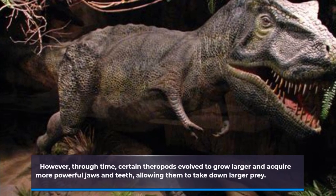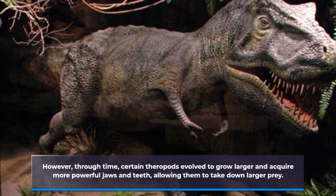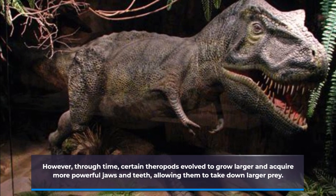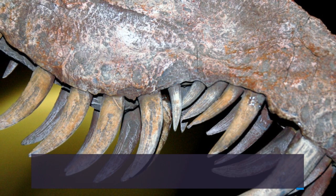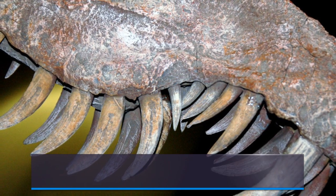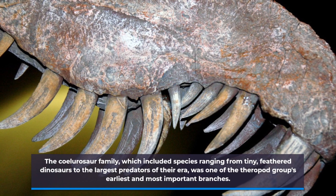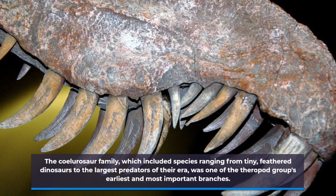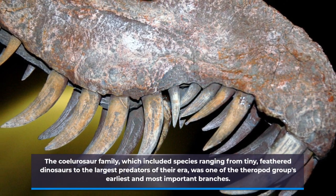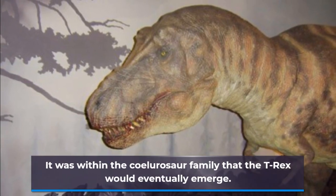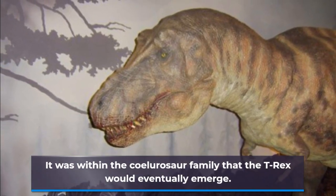Certain theropods evolved to grow larger and acquire more powerful jaws and teeth, allowing them to take down larger prey. The coelurosaur family, which included species ranging from tiny feathered dinosaurs to the largest predators of their era, was one of the theropod group's earliest and most important branches. It was within the coelurosaur family that the T-Rex would eventually emerge.